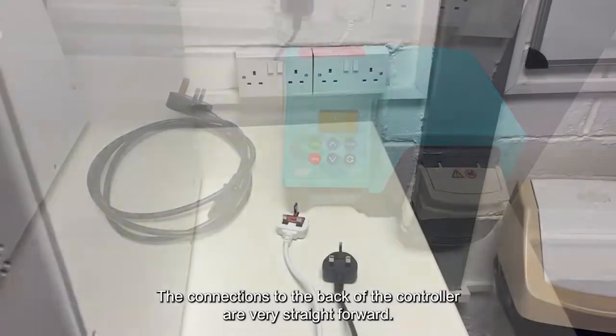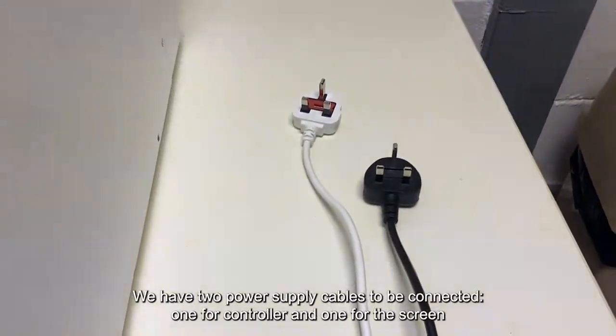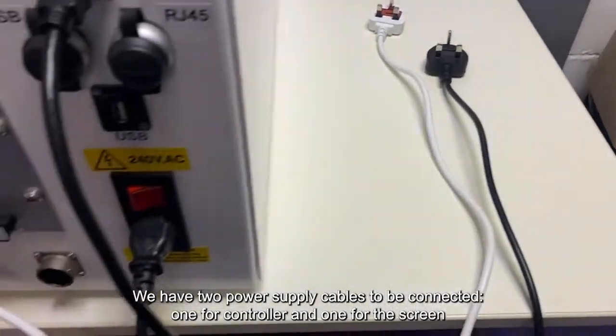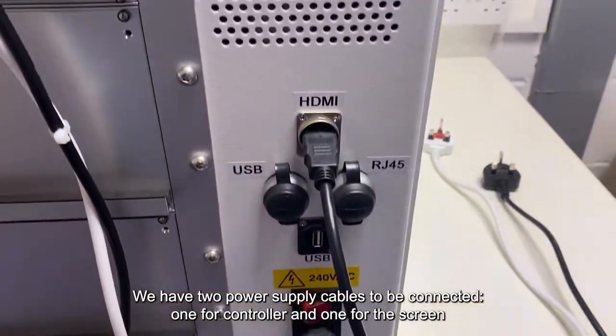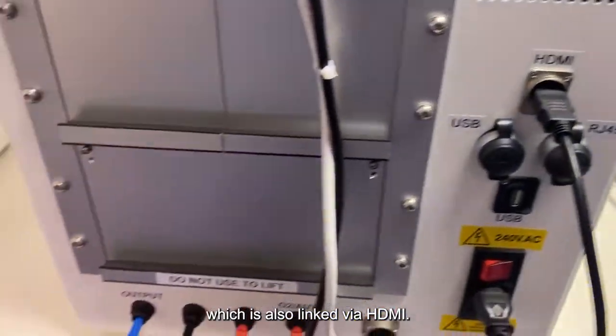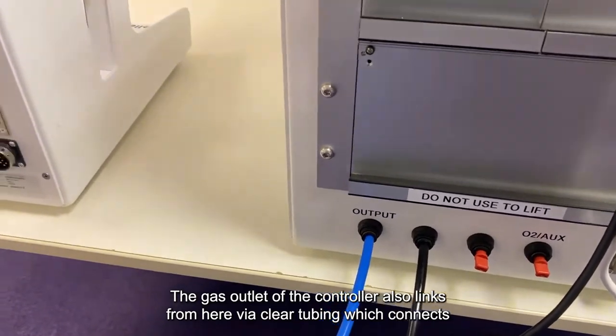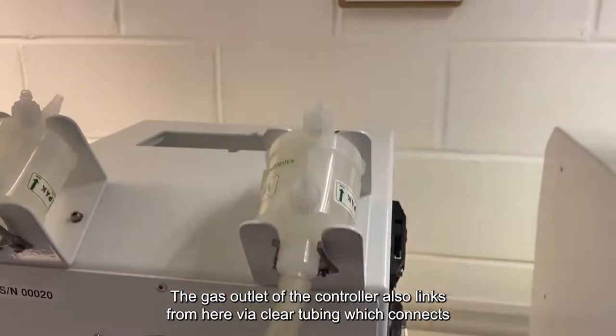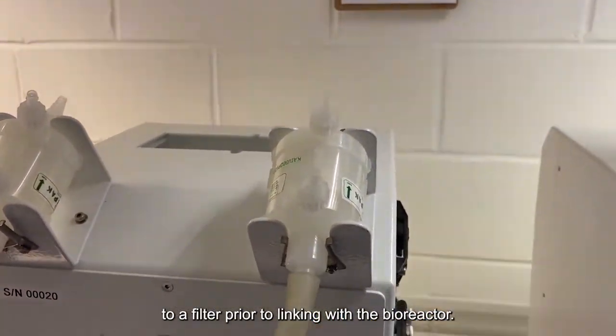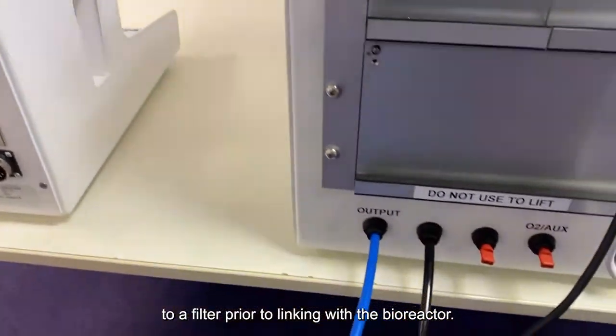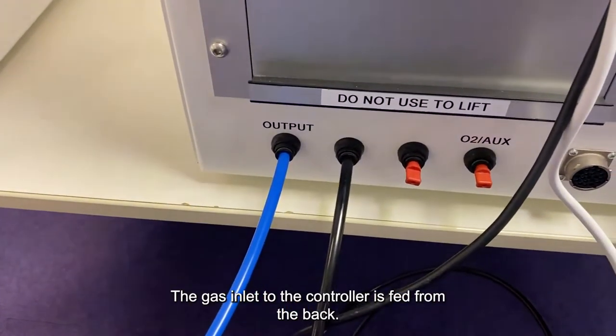The connections to the back of the controller are very straightforward. We have two power supply cables to be connected, one for controller and one for the screen, which is also linked via HDMI. The gas outlet of the controller also links from here via clear tubing, which connects to a filter prior to the linking with the bioreactor. The gas inlet to the controller is fed from the back.